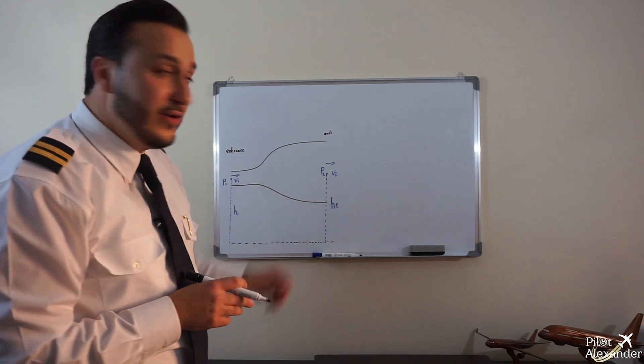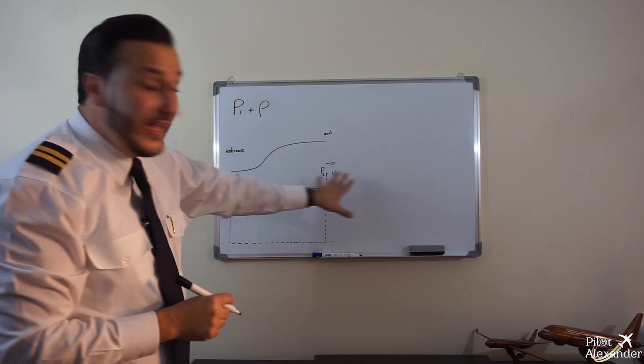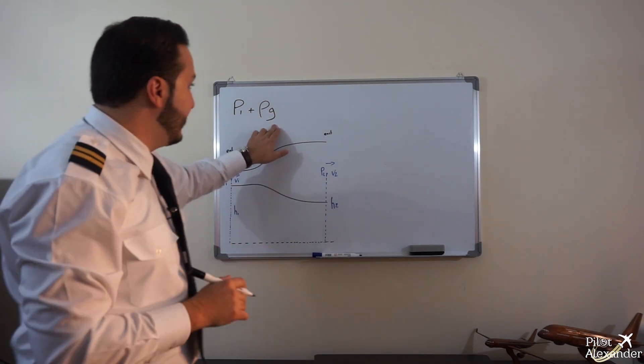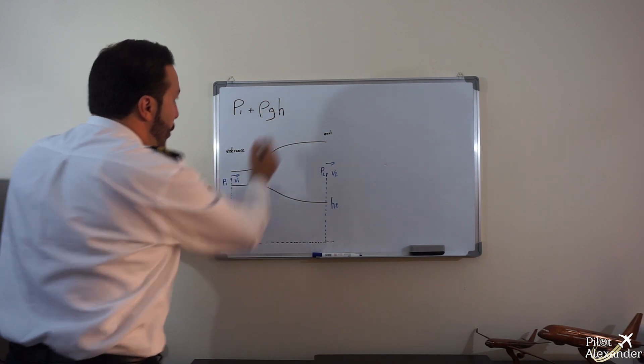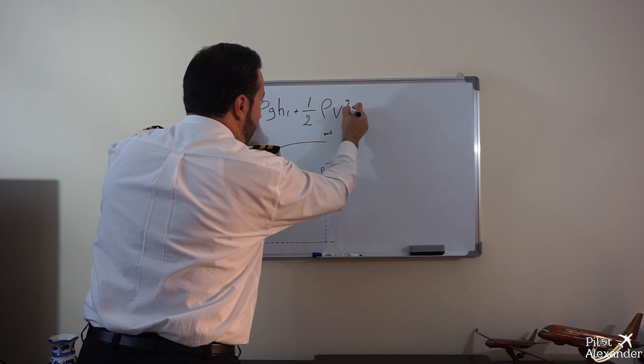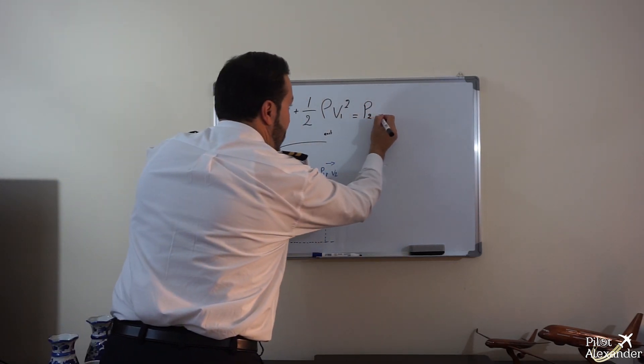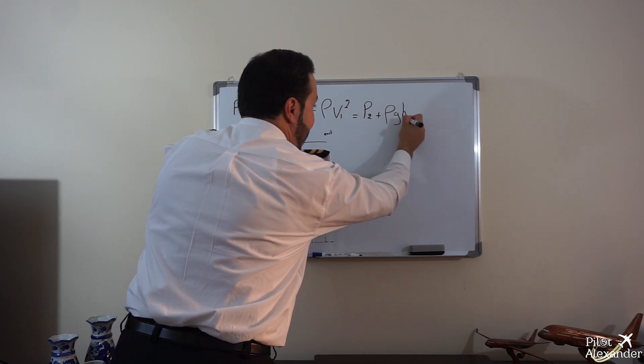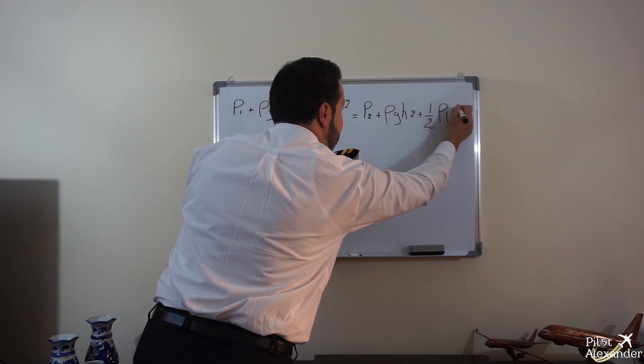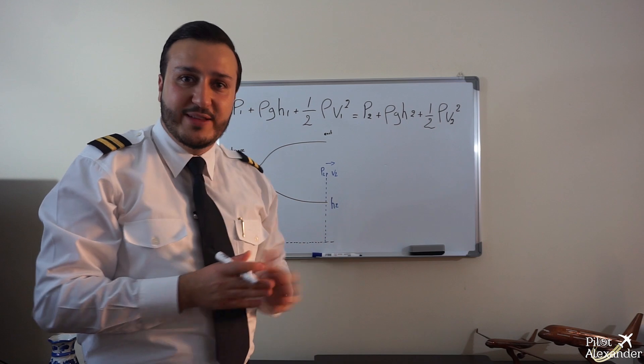Now the equation applied to this particular case is: pressure at position one plus ρ, which is the density of the fluid that doesn't change at position one and position two, times the gravity, or the acceleration due to gravity, which is a constant on Earth, times the height at position one, plus half of ρ times velocity squared at position one, equals pressure at position two plus ρgh at position two plus half of ρv squared at position two. So this is the exact equation. Please guys, just go look online, dig into it—it is very interesting to know all that. Thank you very much.